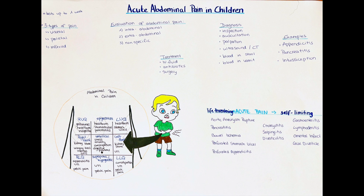Another way to classify abdominal pain is based on its location. The abdomen is divided into nine areas: the right upper quadrant, epigastrium, and left upper quadrant form the upper part; the right lumbar or flank region, periumbilical area, and left lumbar or flank region form the middle part; and the right lower quadrant, suprapubic area, and left lower quadrant form the lower part. A patient may also report generalized pain involving most or all areas simultaneously.